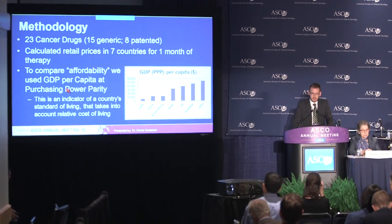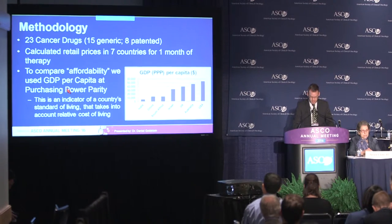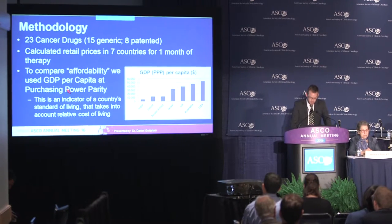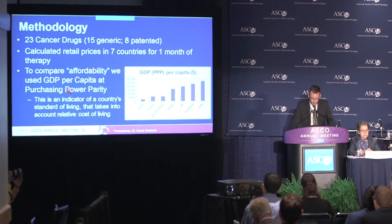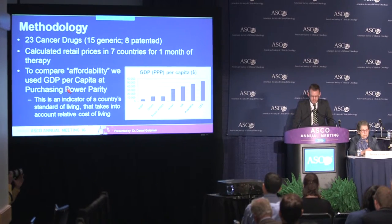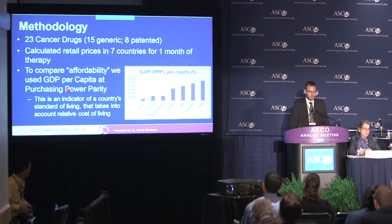For the countries analysed, in the subsequent figures the countries are listed from left to right as GDP per capita increases. The USA has the highest GDP per capita of these countries at around $55,000, and India has the lowest at around $5,000. We then took the median monthly prices in each country and divided it by the monthly GDP per capita in order to understand affordability.